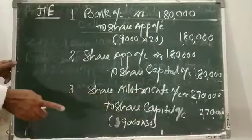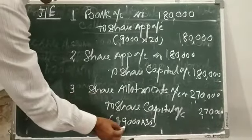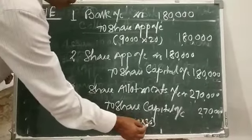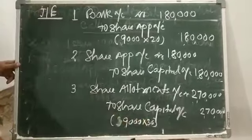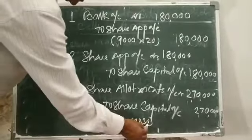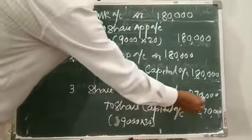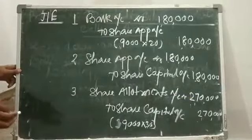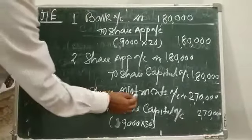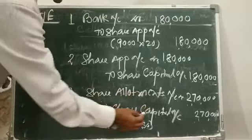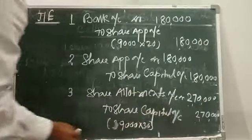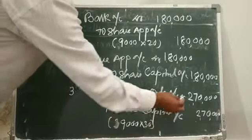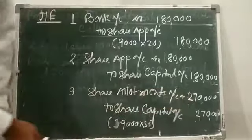Third entry: Share Allotment Account Dr. to Share Capital Account — being allotment money due. How much? 9,000 shares at Rs. 30 each, so Rs. 2,70,000. Share Allotment Account to Share Capital Account — Rs. 2,70,000.